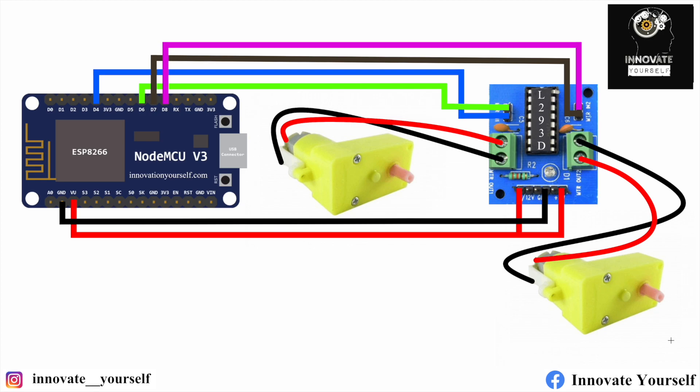We are using four pins — D4, D6, D7, and D8 — to communicate with the motor driver, and our motors are connected accordingly. If you want to make the connections and have it work just like I'm showing today, make the connections exactly as shown here so you won't face any difficulty. Now let's move ahead and start uploading the code.